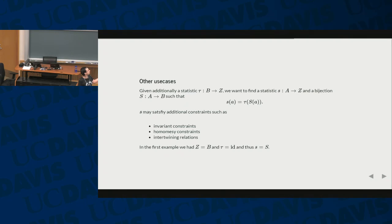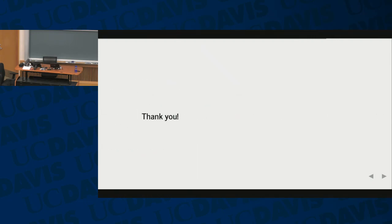So if you set C to be equal to B, and tau to be equal to identity, you actually immediately get that the statistic lowercase s must be capital S. So this more general setup also gives you the way how you can find the bijections. Because there's not much time, this is all I want to say. So check it out in Sage, and thank you.